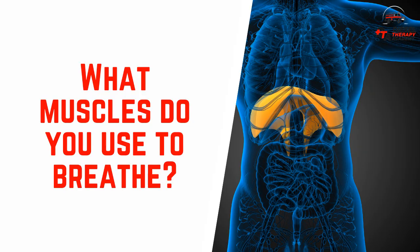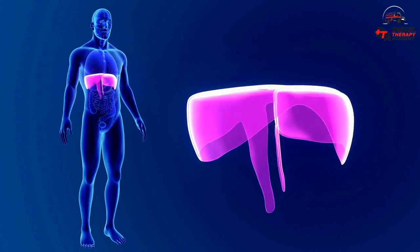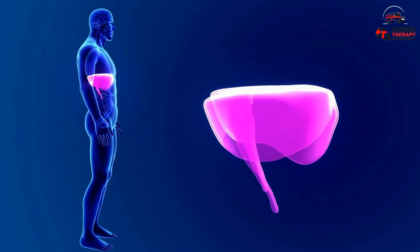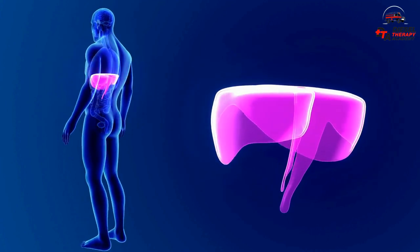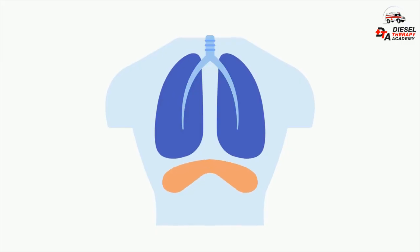What muscles do you use to breathe? Your main breathing muscle is the diaphragm. This divides your chest from your abdomen. Your diaphragm contracts when you breathe in, pulling the lungs down, stretching and expanding them.